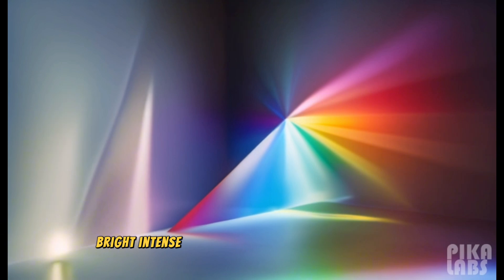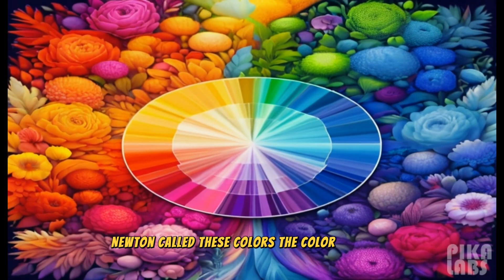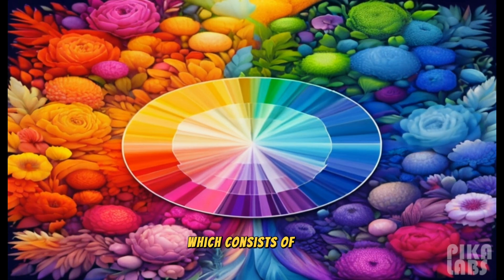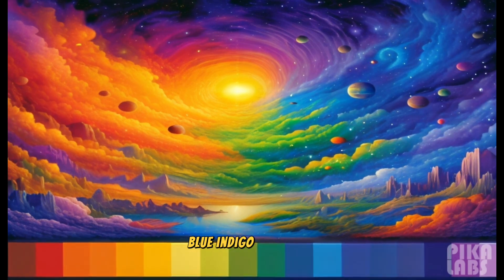Bright, intense colors were produced from the prism. Newton called these colors the color spectrum, which consists of red, orange, yellow, green, blue, indigo, and violet.